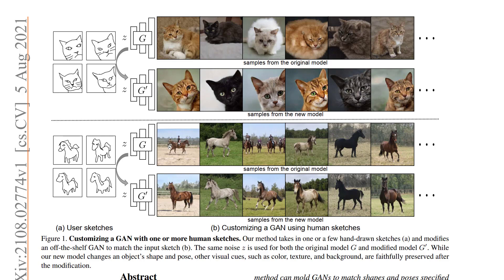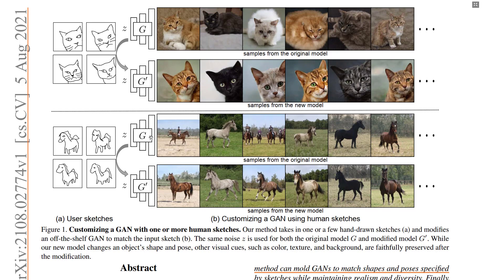Coming back to the paper, we have this generative model which, when given an input noise, is able to generate this type of data. What if we're able to modify the weights of this generator neural network such that we now have a new generator called G prime, whose outputs are based on some input sketches? By default the model will just generate horses, but when the model takes into consideration these input sketches, the output is based on those sketches.